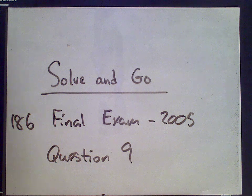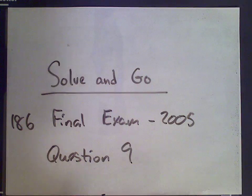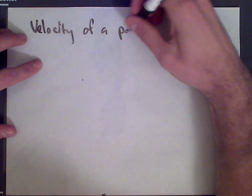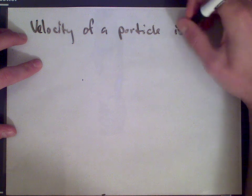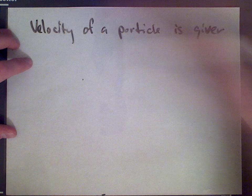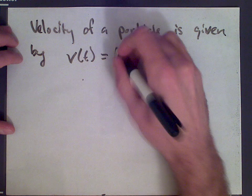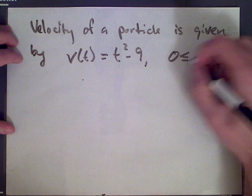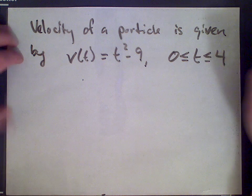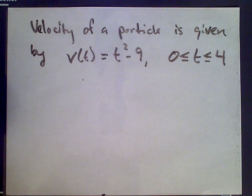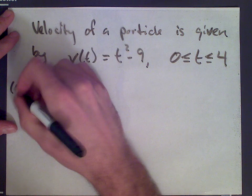Hi, welcome to solveandgo.com. This problem is the next in a series of solutions to the Math 186 final exam from 2005. In this question, we're given the velocity of a particle: v(t) = t² - 9, where t is between 0 and 4. The velocity at time t is given by that function, and then question A asks for the average acceleration.